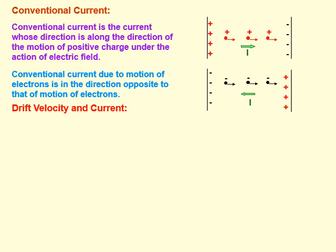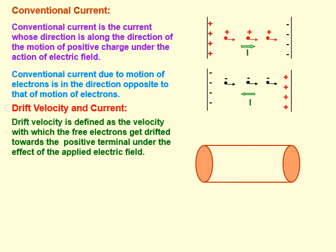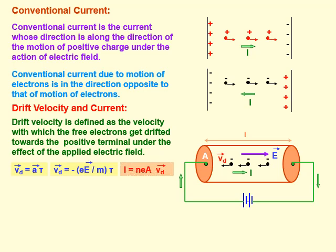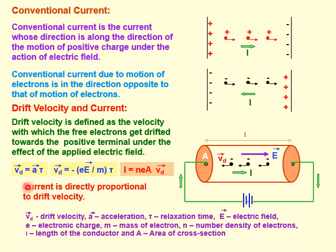Now comes drift velocity and current. In this slide we see what drift velocity is and its relation with current. Drift velocity is defined as the velocity with which the free electrons get drifted towards the positive terminal under the effect of applied electric field.